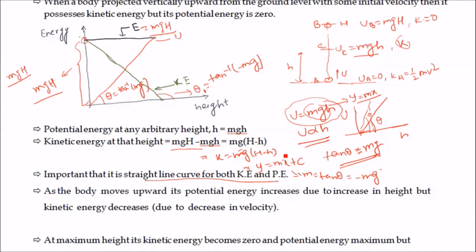An important conclusion: both the kinetic energy and potential energy curves are straight lines. As the body moves upward, its potential energy increases due to the increase in height, but its kinetic energy decreases due to the decrease in velocity. At the maximum height (point B), potential energy is maximum while kinetic energy reduces to zero, as the velocity of the object is zero at that point.